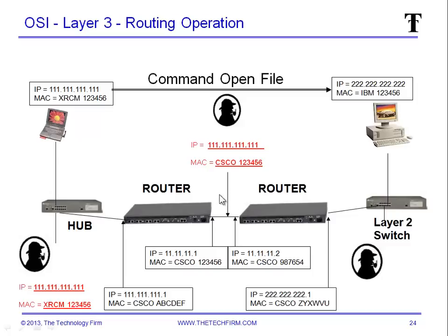If the packet was moving back towards the laptop, then obviously this MAC address would be this router's. So it's important that if you have a MAC filter down here, you don't filter on the laptop, you don't filter on that switch, and you don't filter on these outward-facing ports — you use these ones over here.